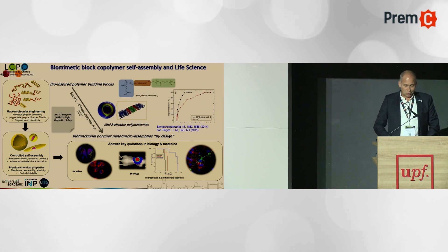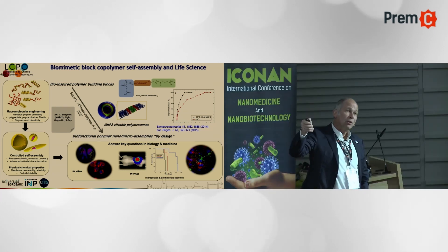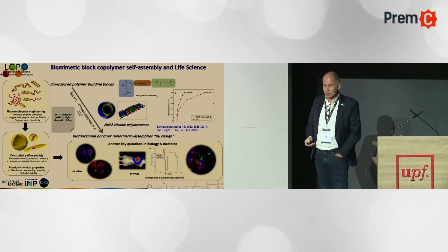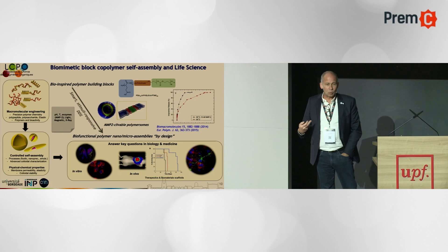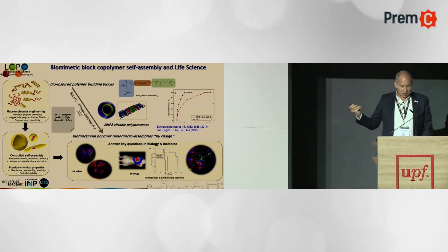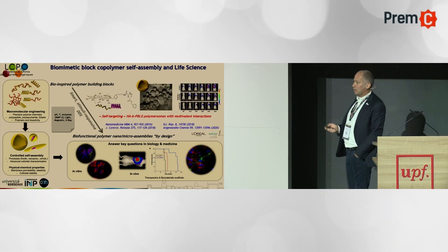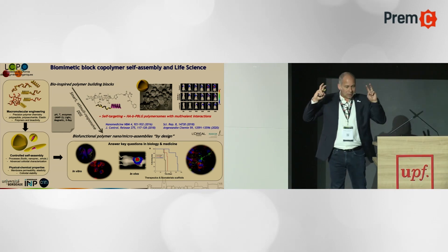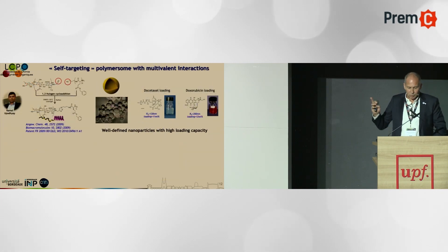We also developed a system using polypeptide as the hydrophilic block — polyglutamate — and incorporated small peptide blocks that can be cleaved by specific enzymes, especially MMP2 and MMP9 metalloprotease, to induce and accelerate drug release when these enzymes are expressed in the tumor environment. We also developed a concept of self-targeting polymeric vesicles using hyaluronic acid on one side and PBLG on the other.